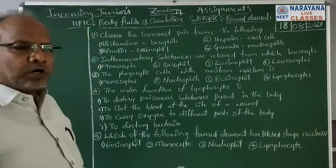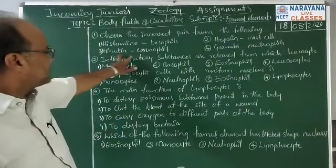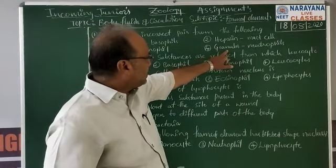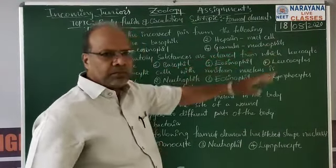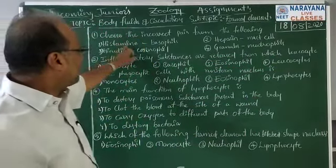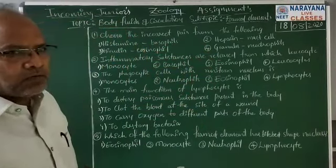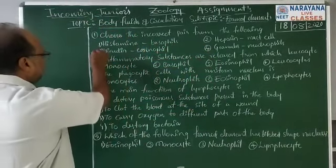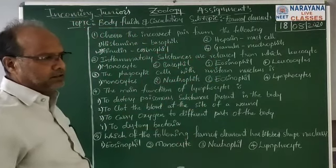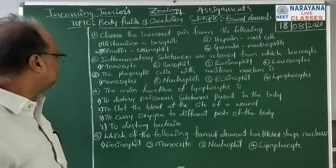Hirudin, eosinophil — hirudin is an anticoagulant present in the salivary glands of leeches. Eosinophils do not secrete any anticoagulant, so this pair is not matching. Among the four choices, number one, two, and four are correct. The only incorrect one is number three: hirudin and eosinophil is an incorrect pair.